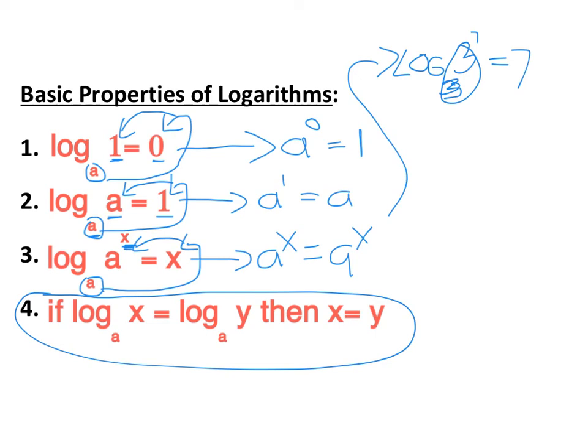We're going to use this basic property of logarithms the next day when we solve logarithmic equations. This is if you just have logs on both sides—if they have the same base, then the arguments, you have to set those equal to each other. Alright, so those are the basic properties. We're going to see these throughout probably the next couple weeks.